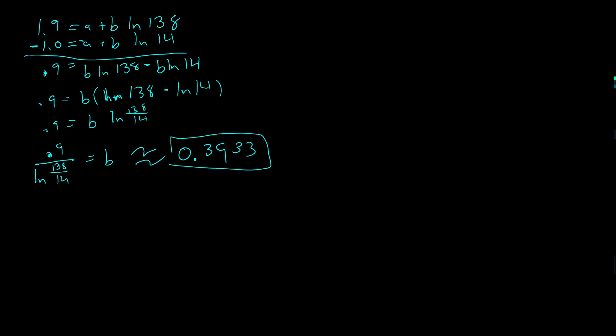I figured out my b value, and now I want to calculate a. I want to take this original equation: 1.0 equals a plus b ln 14 and solve for a. So a is equal to 1.0 minus b ln 14. But I know b now, so a equals 1.0 minus 0.3933 times the natural log of 14. I run to my calculator. I think I get a negative value. 1 minus 0.3933 times ln 14. Yep, I get a is negative 0.0379. Again, I'm keeping four decimal places.